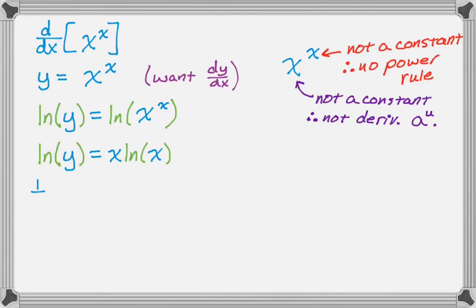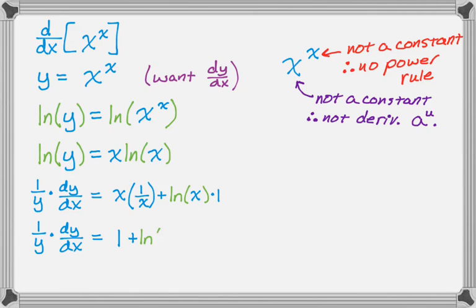And now I'm going to take the derivative of both sides. So 1 over y dy dx. I do the chain rule on that side and implicit differentiation. And then on the other side, I'm going to have to use the product rule. First derivative of the second plus second times the derivative of the first. I'm going to clean that up a little bit. So we end up with 1 plus the natural log of x.